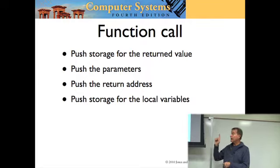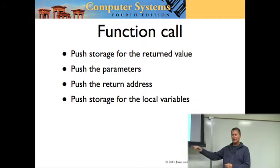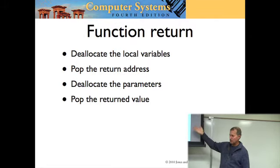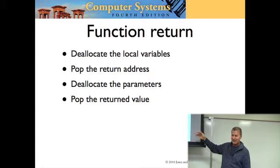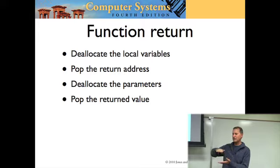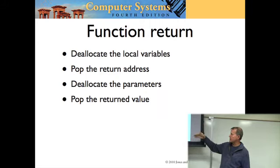The fourth thing is storage for the local variables. Note it's just storage — no values. Values are pushed with the parameters, but with local variables it's just storage; you don't know what the values are. When you return from a function, things happen in the opposite order — LIFO, last in first out. You deallocate the locals, pop the return address, deallocate the parameters, then pop the return value.